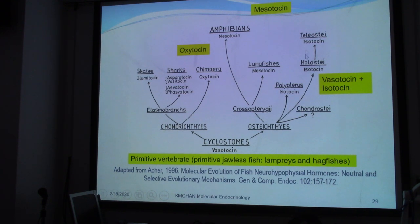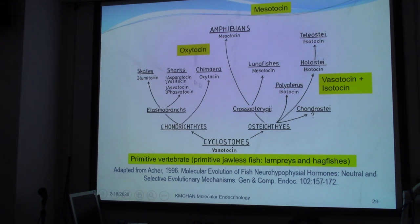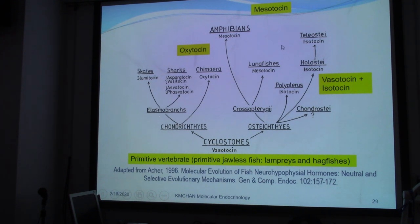Isotocin starts from here and then into teleosts. So the primitive vertebrates including these primitive jawless fish, such as lamprey and hagfish, would have vasotocins. We are keeping oxytocin in one line and isotocin in another line, though these are perhaps more speculative. What we are trying to understand is that oxytocin exists in different organisms among the vertebrates.